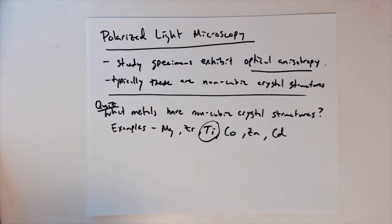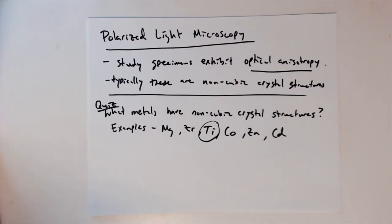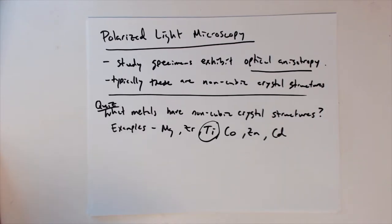So obviously if you're dealing with a titanium sample, polarized light is going to be useful. But it is also useful for other ceramics and polymers as well.